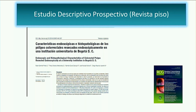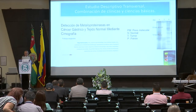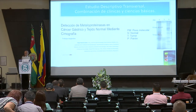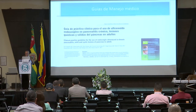También en una revista de piso con el doctor Robin Prieto, habíamos comentado que ya habíamos hecho un estudio retrospectivo sobre cuál era la importancia del tamaño de los pólipos en colon y la probabilidad de malignidad; hicimos un estudio descriptivo prospectivo también publicado en la revista colombiana. Además, cuando existía San Juan de Dios, hicimos con el grupo de inmunología del doctor Patarroyo un trabajo con científicos en metaloproteínas, combinando ciencias básicas con clínicas: detección de metaloproteínas en cáncer gástrico en tejido normal mediante zimografía, calculando pesos moleculares, publicado en la revista colombiana.